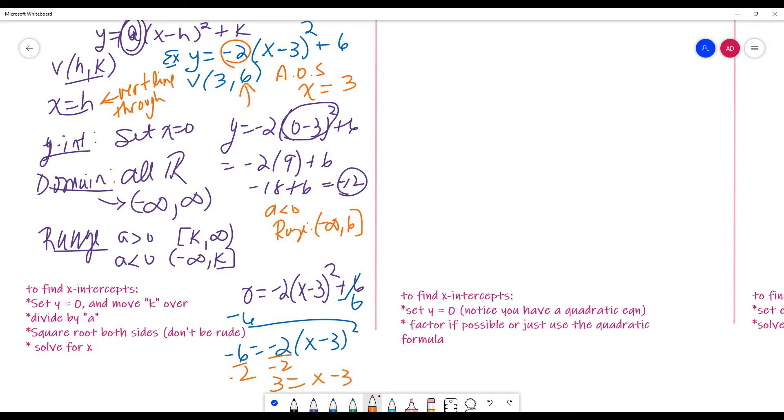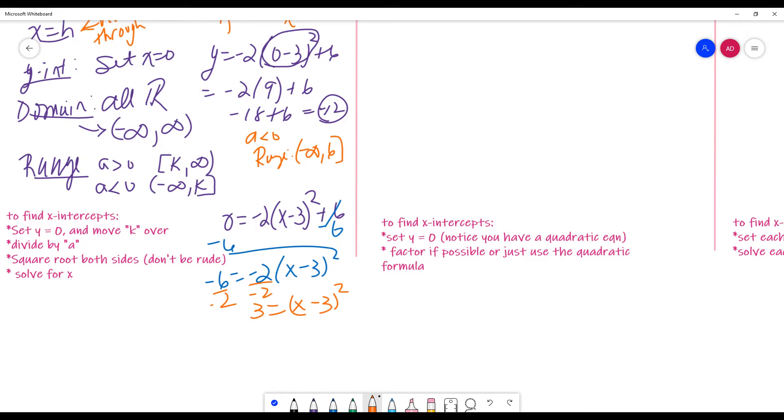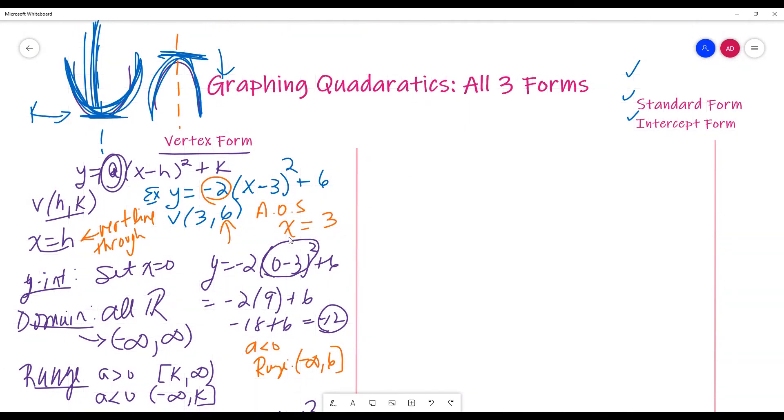And then, I have to undo a square. Well, to undo a square, you have to square root, right? And don't be rude. Always remember, you got to bring in the plus and minus. Whenever you bring in a square root, you need to bring in a plus and minus. Otherwise, that's just rude. And if you don't believe me, go and watch another video. I have a few of them posted. All right. So, these guys are my X intercepts, okay? So, that's usually all of the properties that I ask for when I'm trying to figure out graphing quadratics. And then, you can sketch the graph, plot the vertex, and then go through that. Okay. Next form.